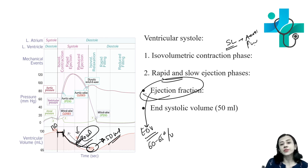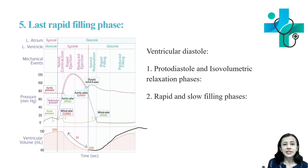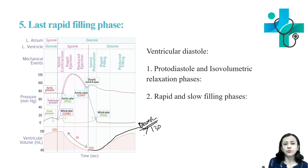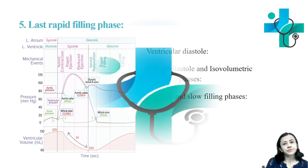Ejection fraction is one of the best indicators for cardiac function and is recorded during echocardiography. During the rapid filling phase, the ventricle is in diastole and there is an increase in ventricular volume. Volume increases until the end of diastole — reaching around 120 to 130 ml. During protodiastole and isovolumetric relaxation there is no change in volume, but during rapid and slow filling phases, the ventricle fills and ventricular volume increases. This concludes pressure and volume changes during the cardiac cycle. Thank you.